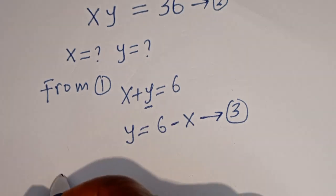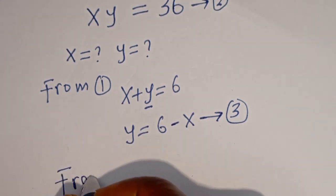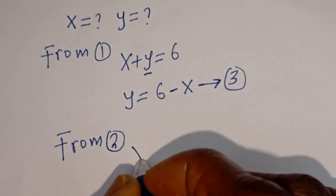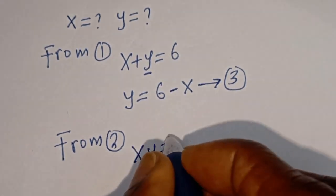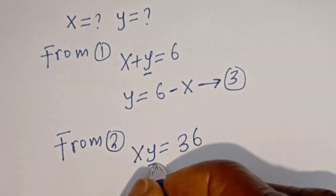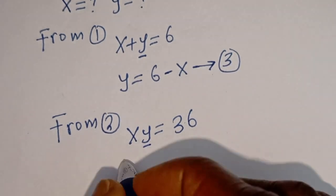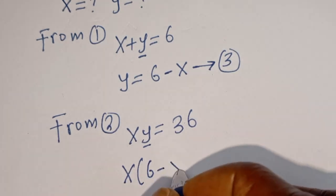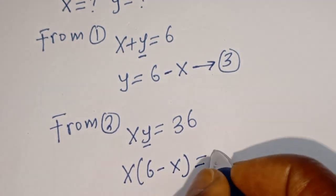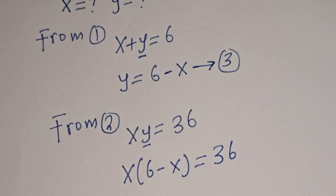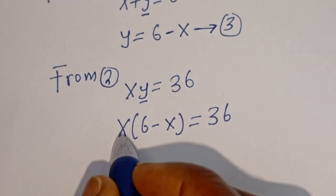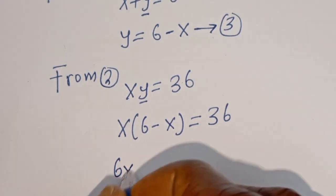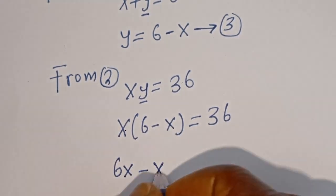Then from equation 2, that is s times y equal to 36, let's substitute for y. Then we have s multiplied by bracket 6 minus s is equal to 36. Let's multiply out: s times 6 is 6s, minus s times s, that is s squared.